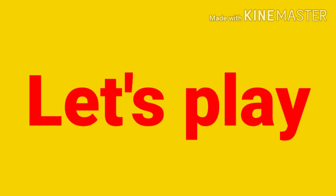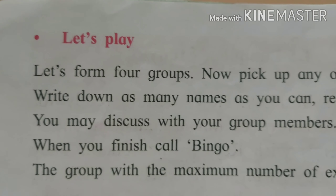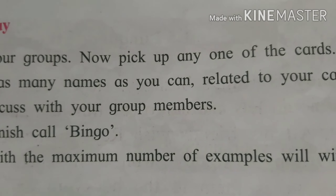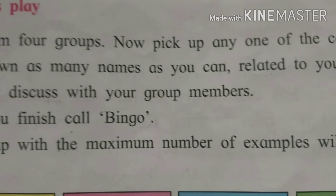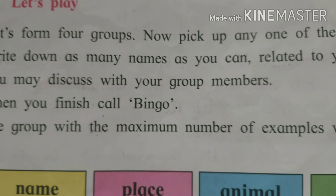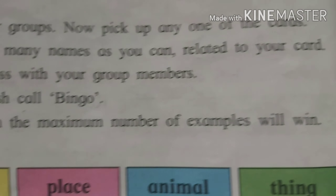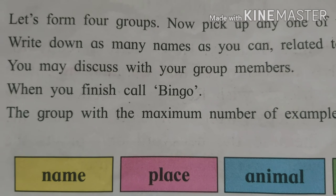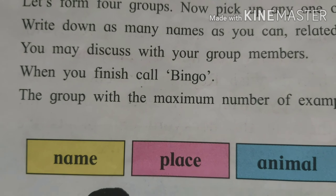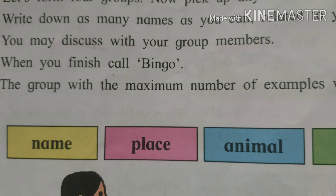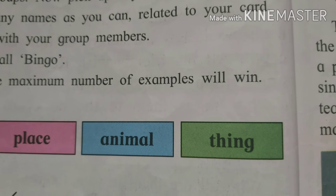Let's play! Form 4 groups. Pick up any one of the cards — Name, Animal, Place, or Thing. Write down as many names as you can related to your card. You may discuss with your group members. When you finish, call bingo. The group with the maximum number of examples will win.